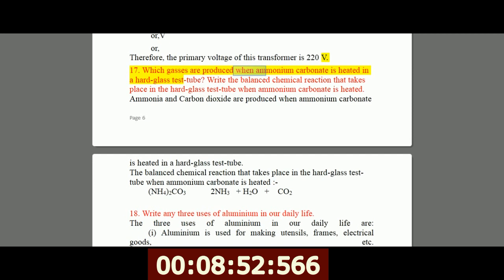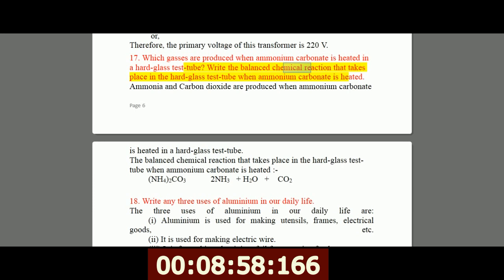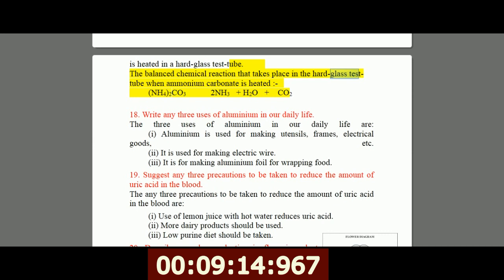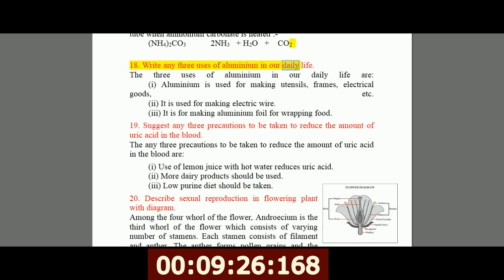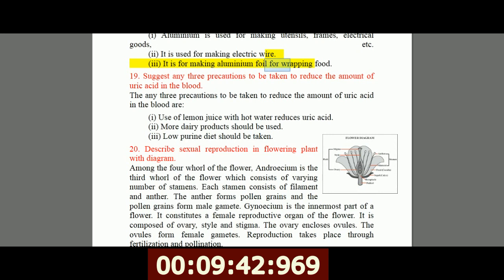17. Which gases are produced when ammonium carbonate is heated in a hard glass test tube? Write the balanced chemical reaction that takes place in the hard glass test tube when ammonium carbonate is heated. Ammonia and carbon dioxide are produced when ammonium carbonate is heated in a hard glass test tube. The balanced chemical reaction is: (NH4)2CO3 gives 2NH3 + H2O + CO2. 18. Write any three uses of aluminium in our daily life. The three uses of aluminium in our daily life are: I, aluminium is used for making utensils, frames, electrical goods, etc. II, it is used for making electric wire. III, it is used for making aluminium foil for wrapping food.